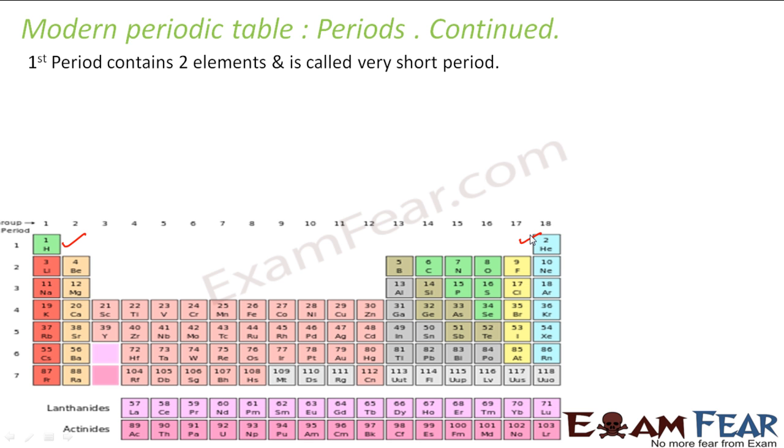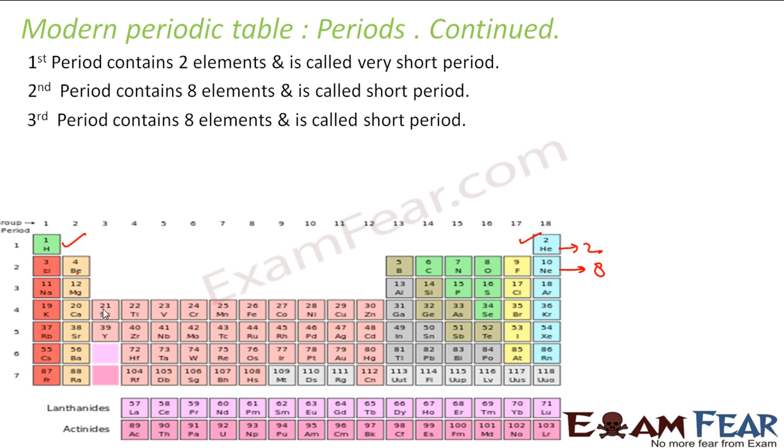And it's called very short period. See the second guy, it has eight elements, lithium, beryllium, boron, carbon, nitrogen, oxygen, fluorine. This guy has eight. This guy has two. It's also called short one. Similarly, the third one, sodium, magnesium, aluminium, silicon, phosphorus, chlorine, argon. It also has eight. Also called short.